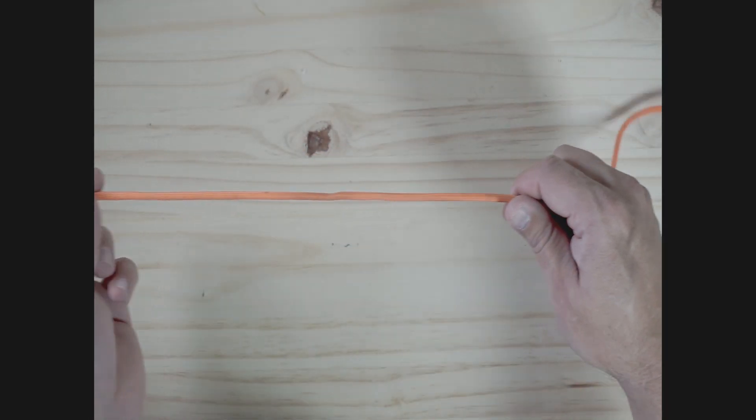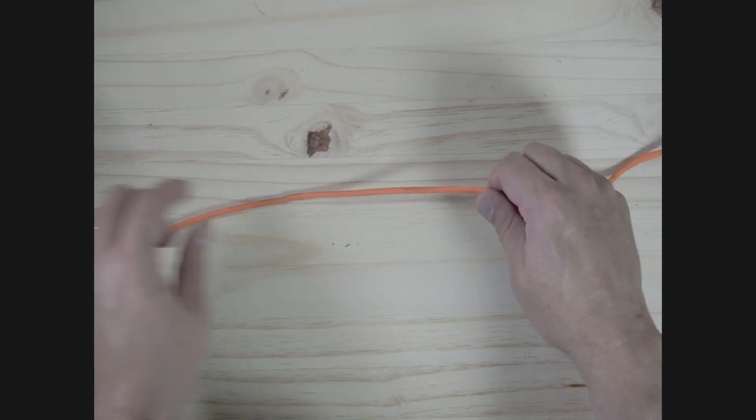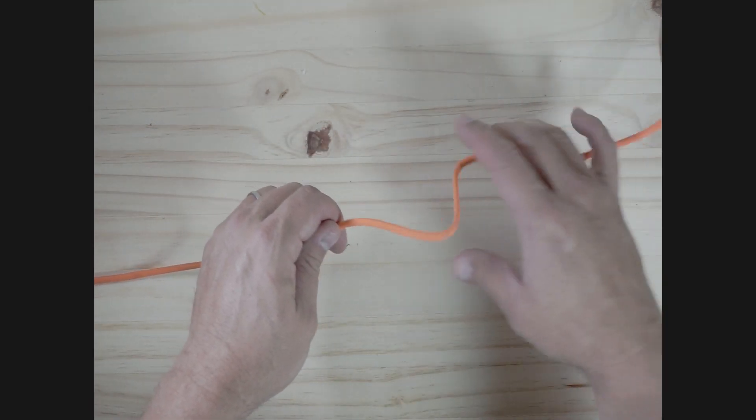Alright, so here we go. Got some paracord here. I like to have kind of a fairly long tag end to give me a lot of room to play with. So you just kind of stretch it out. Tag end on my left, main line on my right.